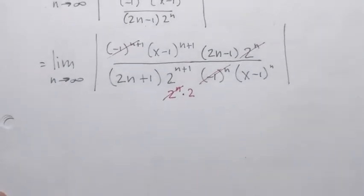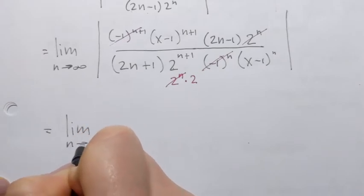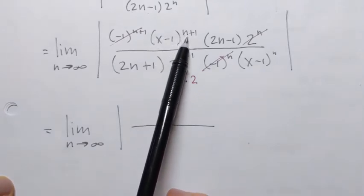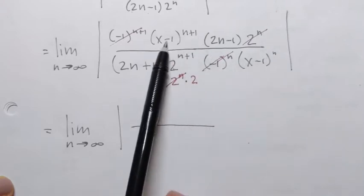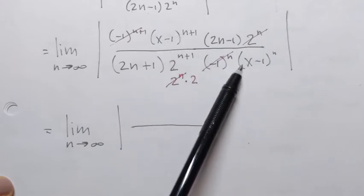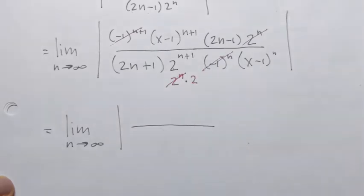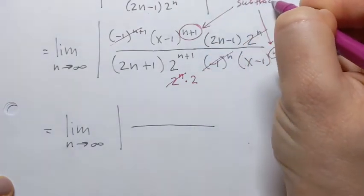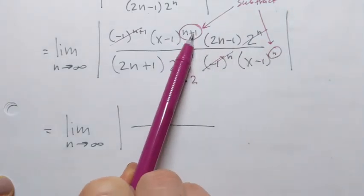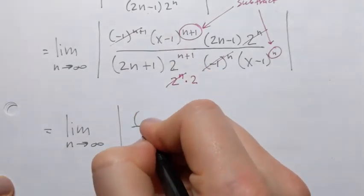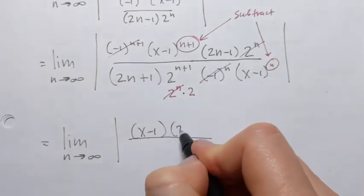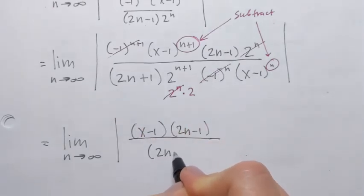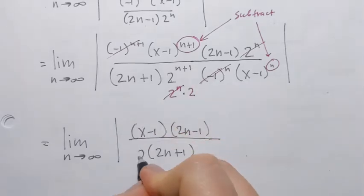Rewriting what remains: x minus 1 to the power n plus 1 divided by x minus 1 to the power n — since the bases are the same, I subtract exponents, giving just x minus 1. We also have 2n minus 1 in the numerator and 2n plus 1 in the denominator, along with the constant 2.